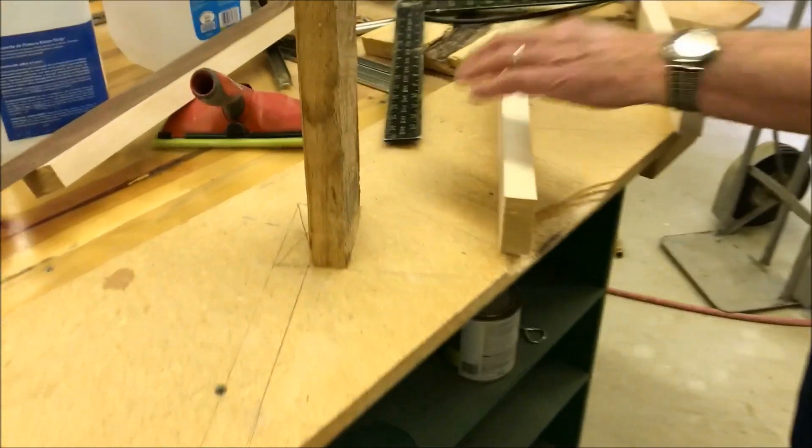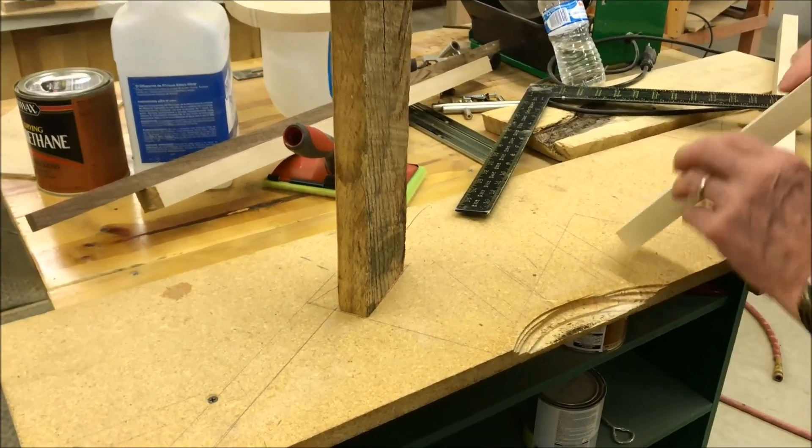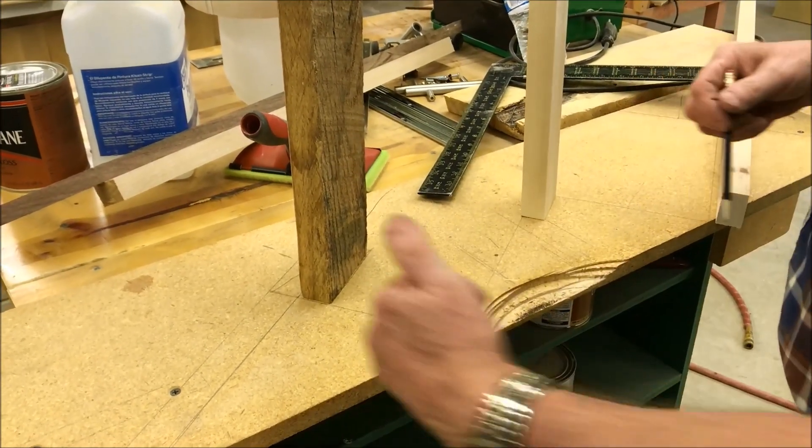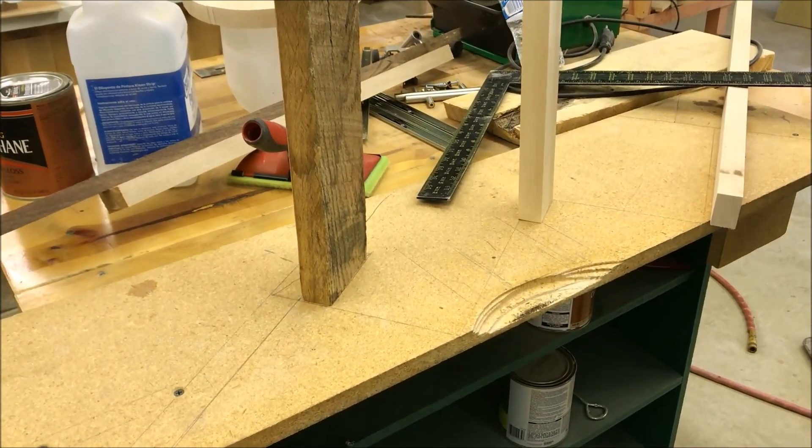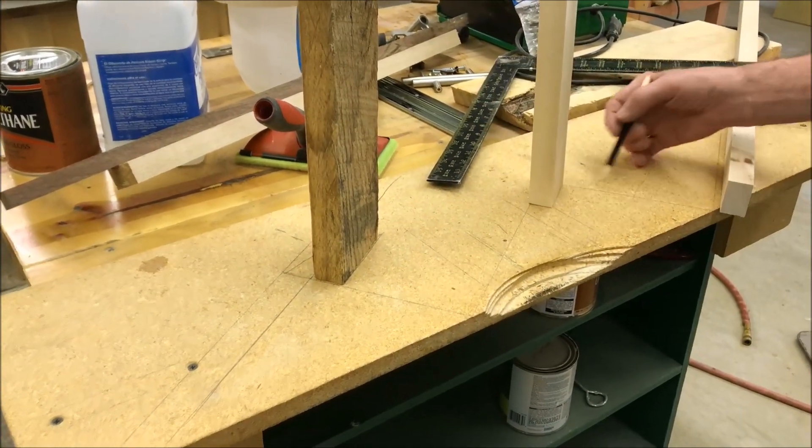And then cut your planks from a two-by, whatever you're going to use. Land them on. This usually is left open. Unless you're finishing in the house, then there would be a riser board in here.